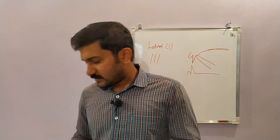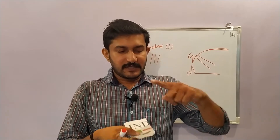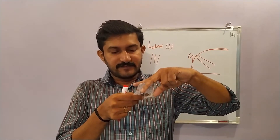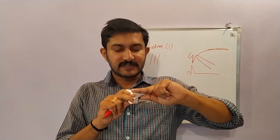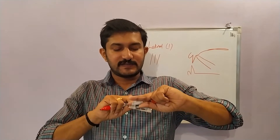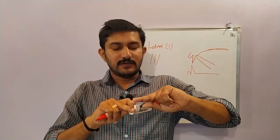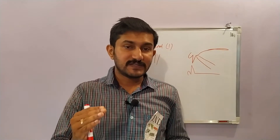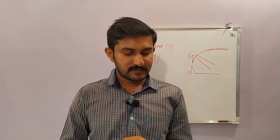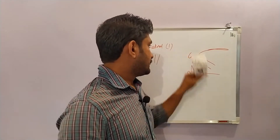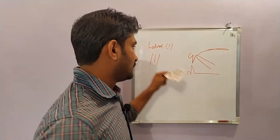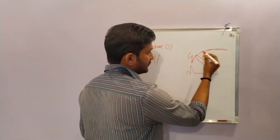The tip of the tongue is in firm contact with the teeth ridge. At the same time, the air is able to escape through the two sides of the tongue. The air escapes through the two sides of the tongue without producing audible friction. That is the manner of articulation of the lateral sound.